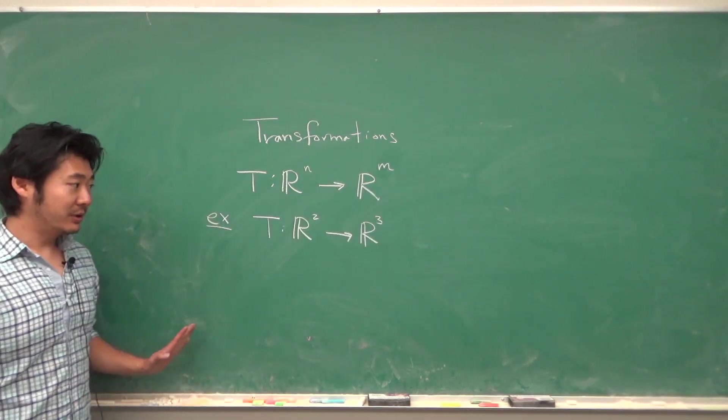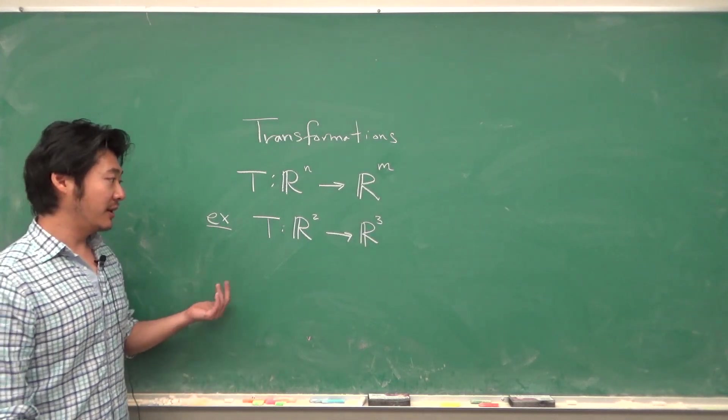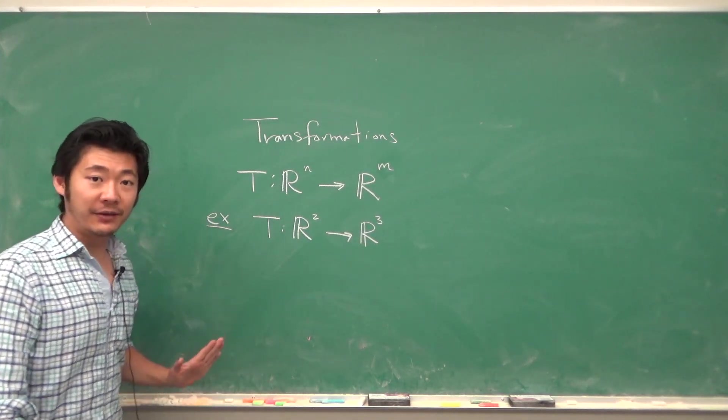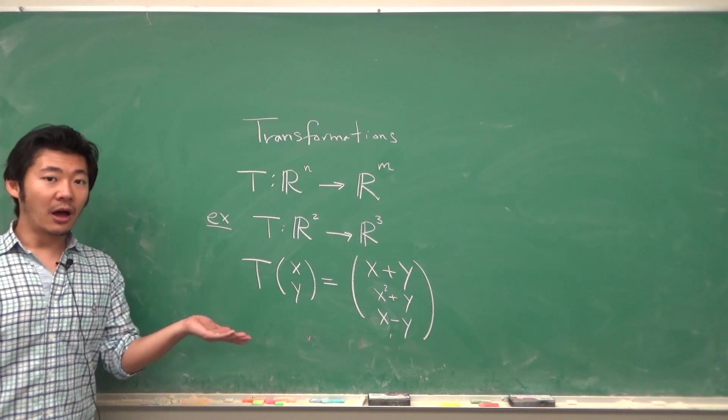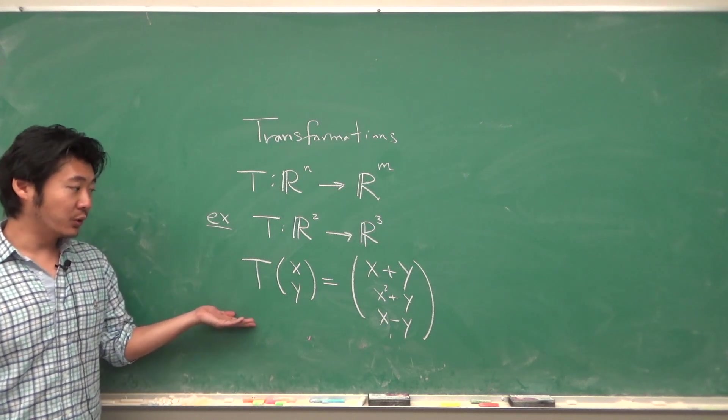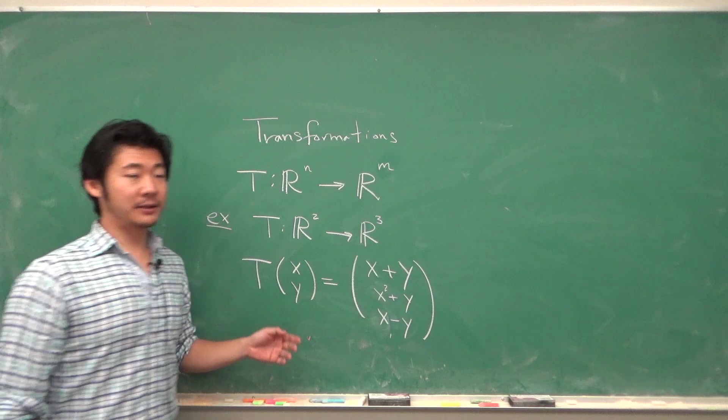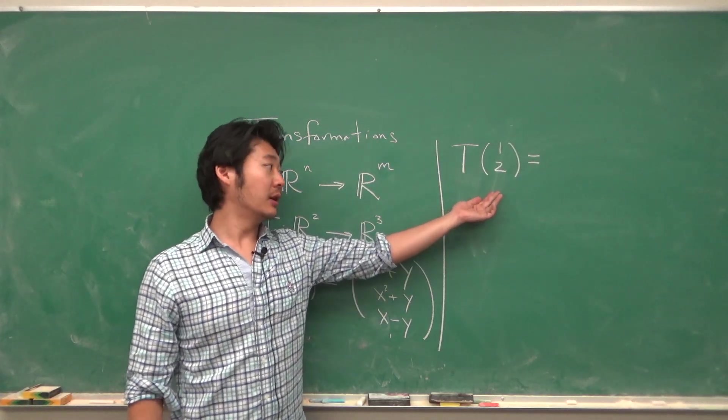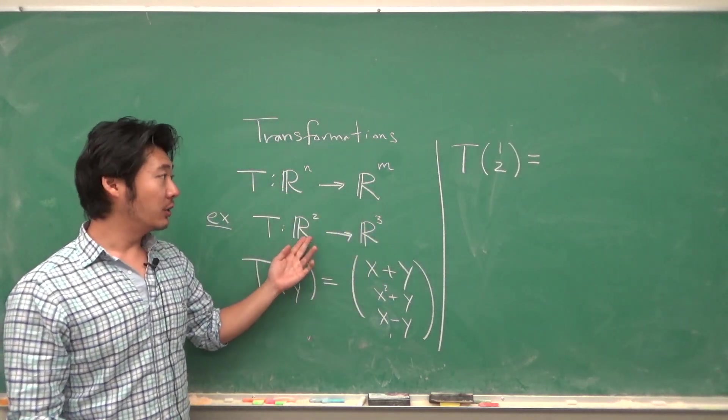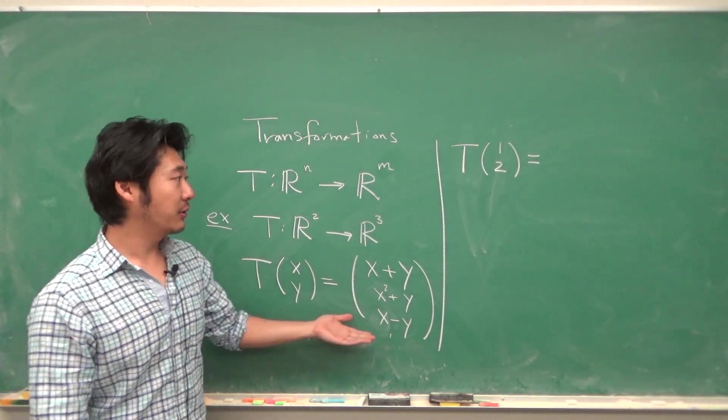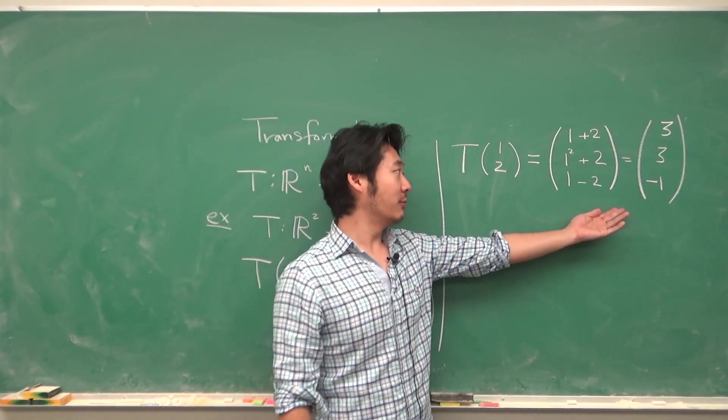For example, suppose we have some sort of transformation taking R² to R³ given by something like this. Then, according to this transformation's rule, a vector such as the vector (1,2) in R² will get sent to this vector in R³: (3, 3, -1).